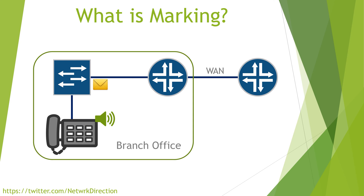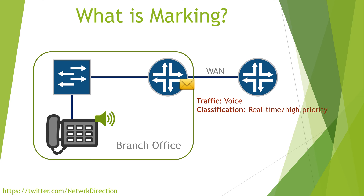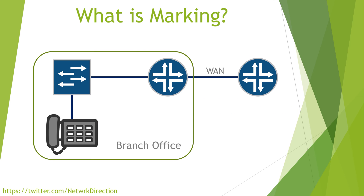When the packets arrive at the router, the router can take a quick look at this marking. The next part depends on how the router is configured — remember that each device has its own configuration and can make its own decisions. Generally, the router will read this marking, see that it's voice traffic and realize that this is high priority. If there's any congestion on the link, the router will make sure that this packet gets through in a reasonable time. So marking packets close to their source will help other devices along the path to make smart decisions when they need to forward the packet on.